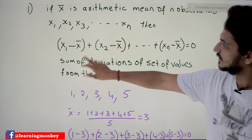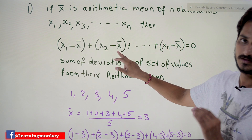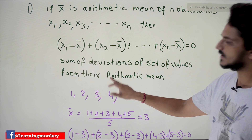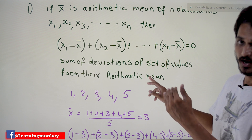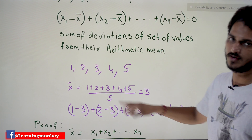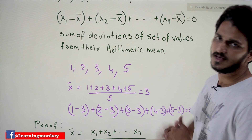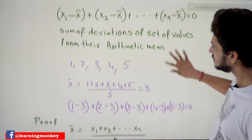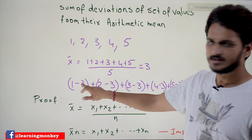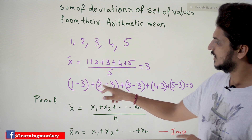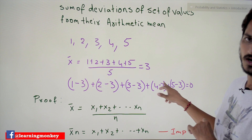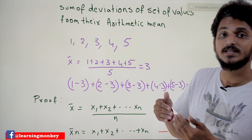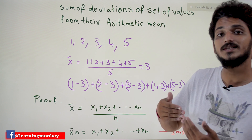This equation — (x1 − x̄) + (x2 − x̄) + ... — is called the sum of deviations of a set of values from their arithmetic mean. We'll understand this with an example. Take the values 1, 2, 3, 4, 5. The mean x̄ = 3. Now take the first data point: 1 − 3, plus 2 − 3, and so on.